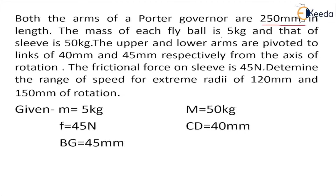The mass of the fly ball is 5 kg, and the mass of the sleeve is given as 50 kg. Whenever you are given a question it is very necessary to write all the given data first. We are also given the frictional force which is 45 Newton. We have to calculate the range of speed for extreme radii of 120 mm and 150 mm of rotation. The upper and lower arms are pivoted at lengths of 40 mm and 50 mm respectively from the axis of rotation.